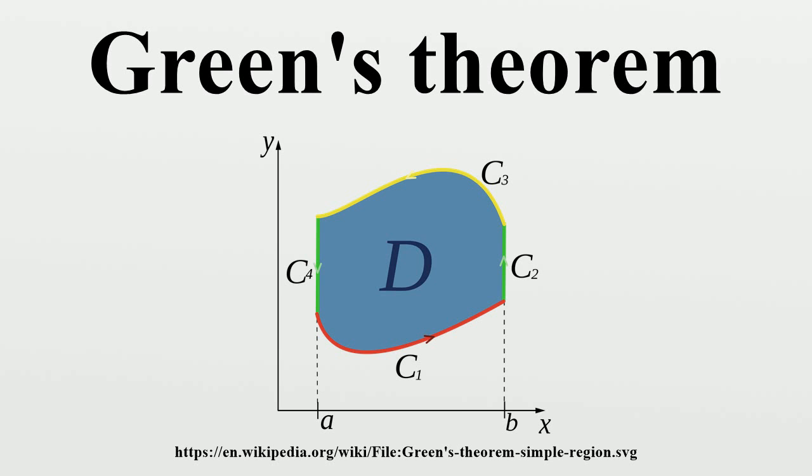Applying Kelvin-Stokes theorem, the surface is just the region in the plane, with the unit normals pointing up to match the positive orientation definitions for both theorems. The expression inside the integral becomes thus we get the right side of Green's theorem. Green's theorem is also a straightforward result of the General Stokes theorem using differential forms and exterior derivatives.